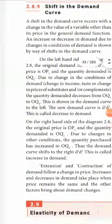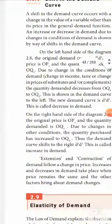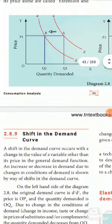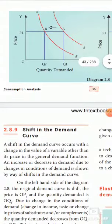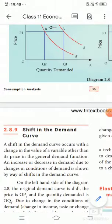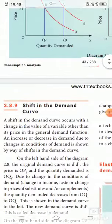Let us look at the diagram. In diagram 2, the price is OP1 and the quantity demanded is OQ1. Due to changes in the conditions of demand, we can observe shifts.